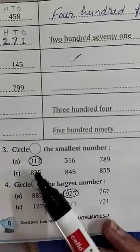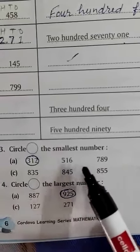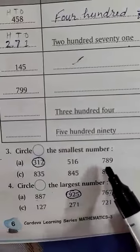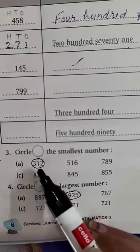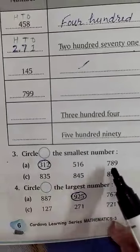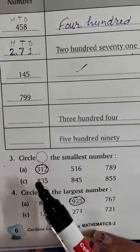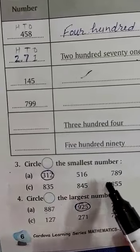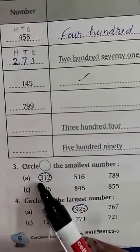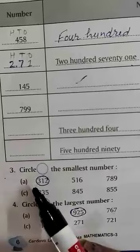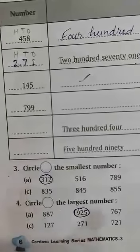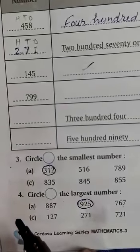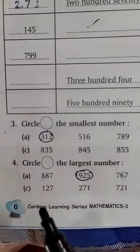You have to check the 100s place, the larger place. Which is the largest place here? 100s place is largest. So, you have to check the 100 place: 300, 500, 700. Which is smaller? 300 is smaller. So, we will circle the 312. Rest of all, you will do yourself.